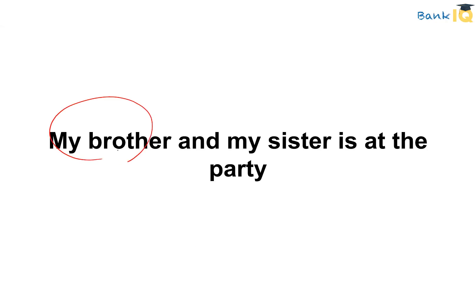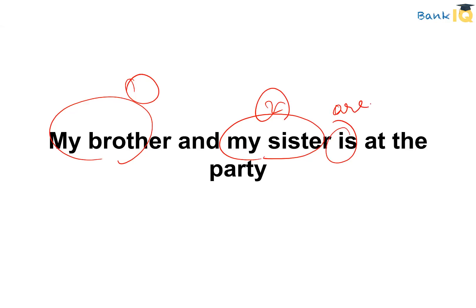Moving on to the third question: 'My brother and my sister is at the party.' Here we have two entities — my brother and my sister — so the subject is plural. A plural subject requires a plural verb. Therefore, 'My brother and my sister are at the party' becomes the correct usage.